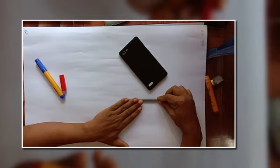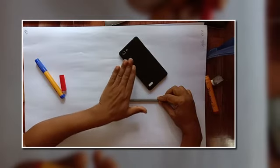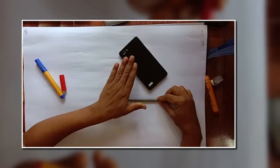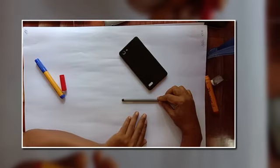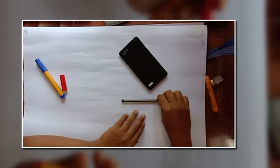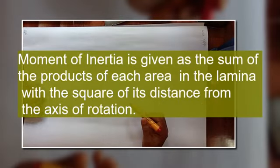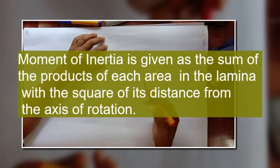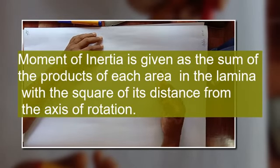We know the area is same, the axis is also same, but the orientation or the distribution of the area is different. That's why the property moment of inertia is also changing. Mathematically we can write it as the sum of products of the area and the square of the distance.